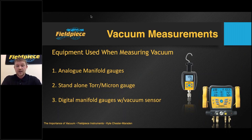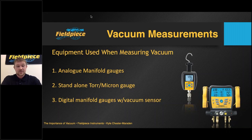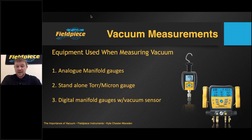The most common device to measure vacuum is the analog manifold gauge; however, these are simply not suitable due to the accuracy they provide in vacuum. While a lot of the industry has invested in better measuring solutions, it's a slow transition — hopefully educational videos, flyers, and webinars such as today can help facilitate that change. Next is the standalone Torr gauge or micron gauge, which is generally acceptable for ensuring a sufficient vacuum has been achieved and is widely available in both analog and digital form. Digital has the advantage of showing a more accurate value, but it's down to personal preference.